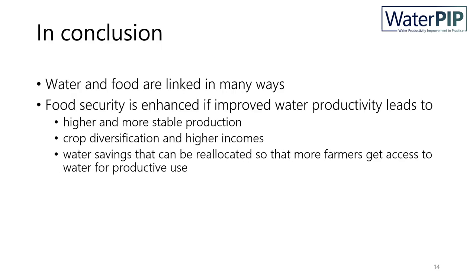In conclusion, water and food security are linked in many direct and indirect ways. But we started this section with the question: what is the link between water productivity and food security? Will a higher water productivity lead to improvement of food security? Well, not necessarily — not always. Food security is enhanced if improved water productivity leads to higher and more stable production, if it leads to crop diversification and higher income, and if it leads to water savings that can be reallocated so that more people get access to water for productive use.